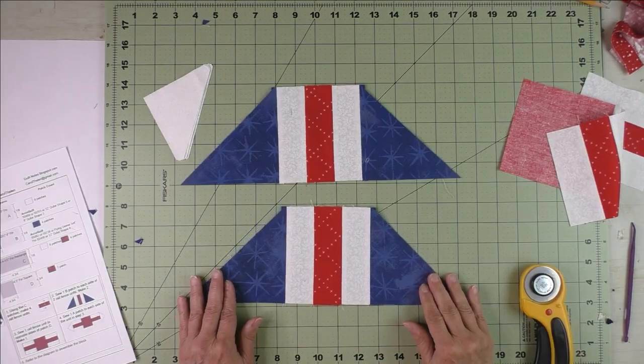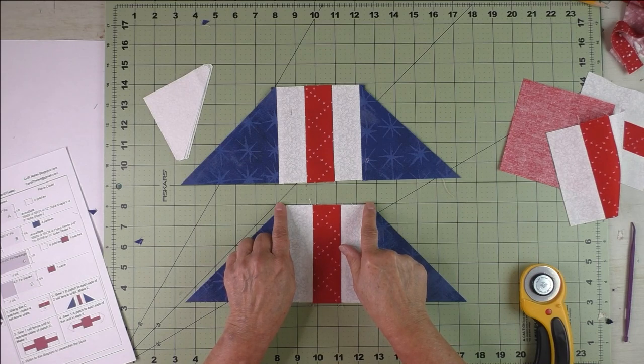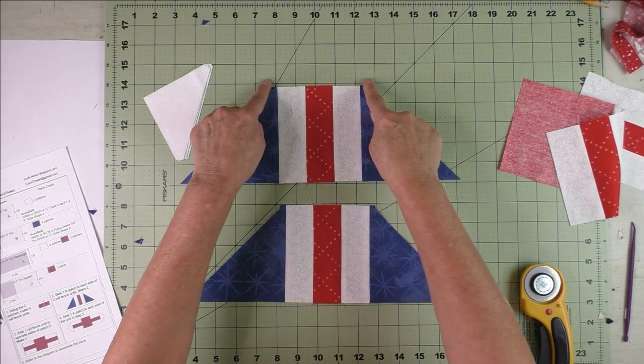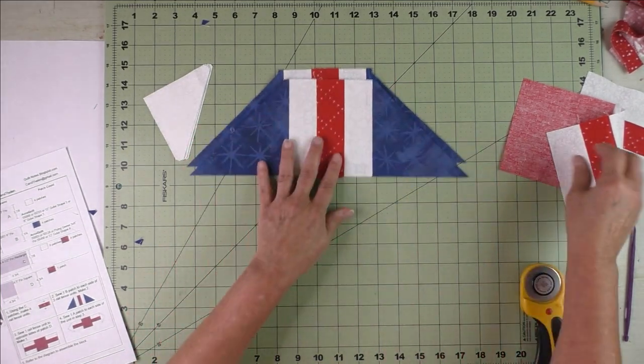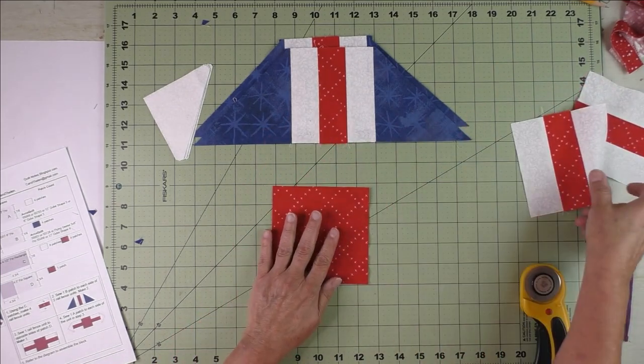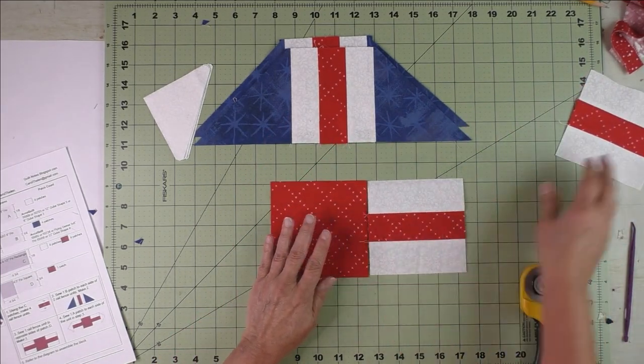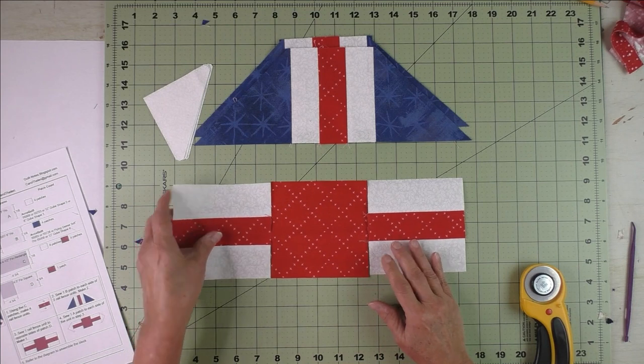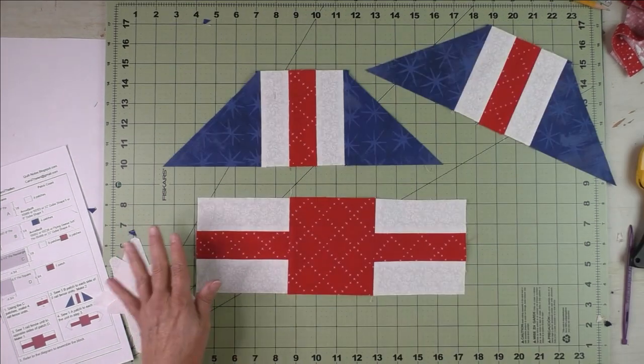Now these units are finished. You have little nubs to cut off here—cut them off even with this top. Next, you'll take the center square and the two remaining rail fence units and stitch it together like this.